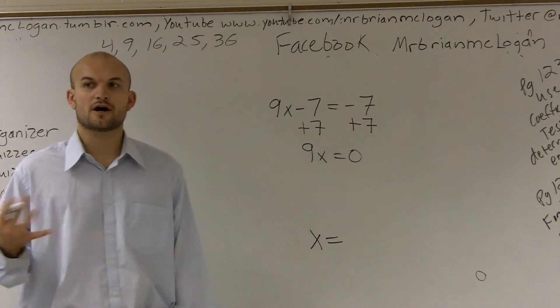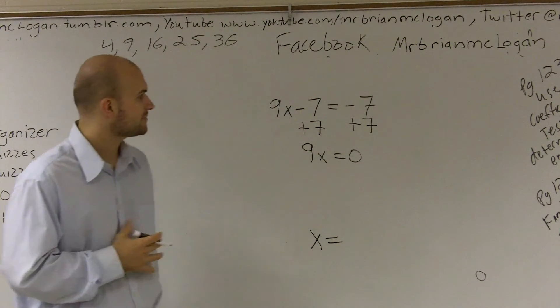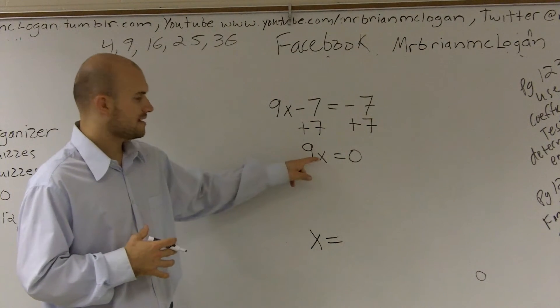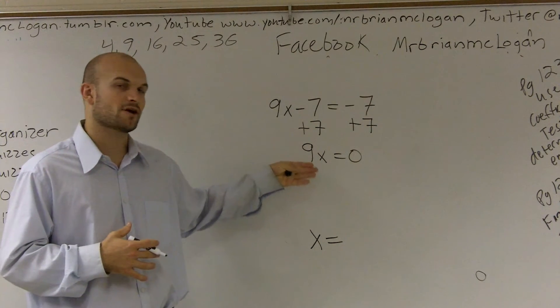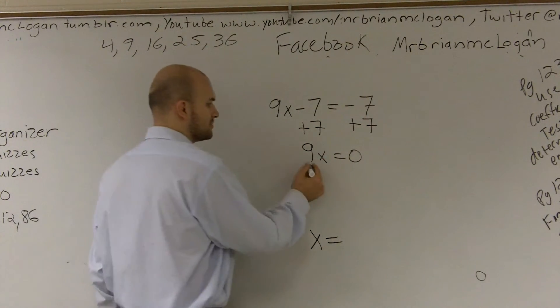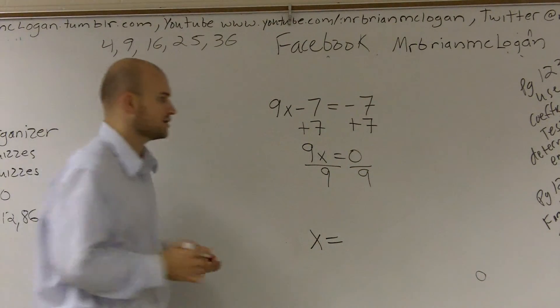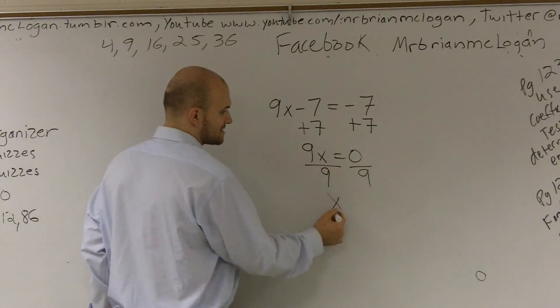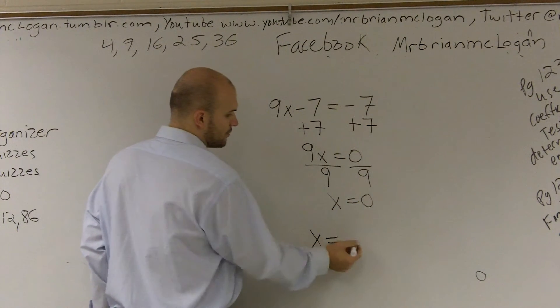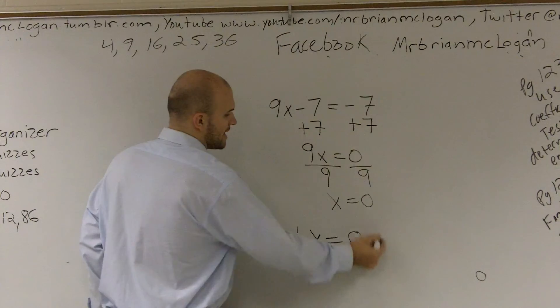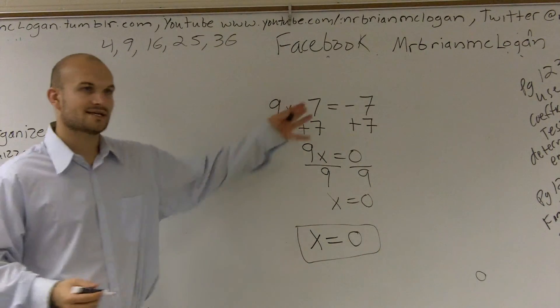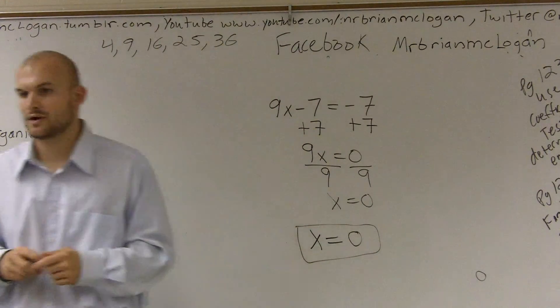However, I'm still going to follow my process. Then I need to undo what's happening to my variable, which is multiplying. So instead of multiplying, I need to divide. And what happens is multiplication and division are going to cancel each other out, and I'll just be left with x equals 0, which is exactly the way I wanted my problem to end. So that's how you solve a simple two-step equation.